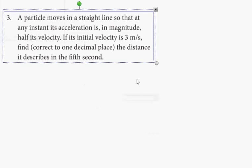A particle moves in a straight line so that at any instance its acceleration in magnitude is half its velocity. If its initial velocity is 3 meters per second, find correct to one decimal place the distance described in the fifth second.